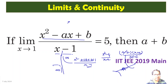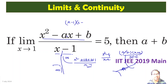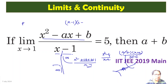Clearly, if this limit exists, x - 1 must be a factor of the numerator. So we can write the numerator as (x - 1)(x - something). Since it's a quadratic equation, there are two roots. The sum of the roots is a, and the product of the roots is b (divided by the coefficient of x², which is 1). Since one root is 1, the other root must be b.